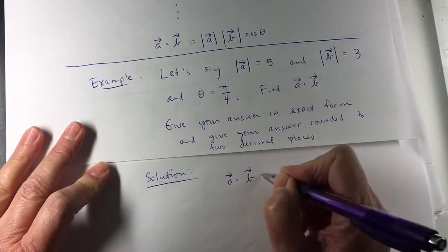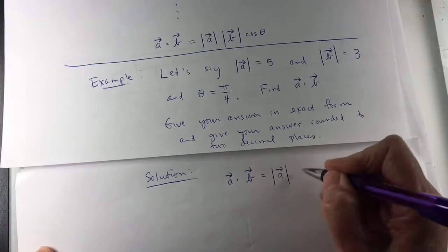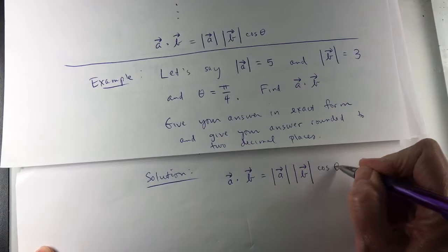I'll use the theorem A dot B equals the magnitude of A times the magnitude of B times the cosine of θ.